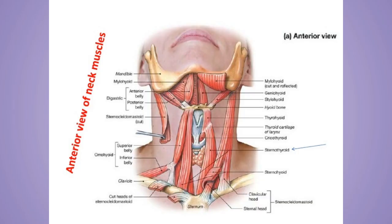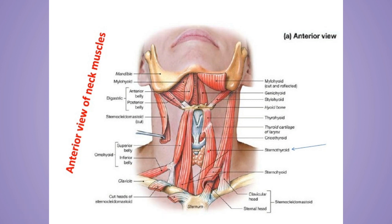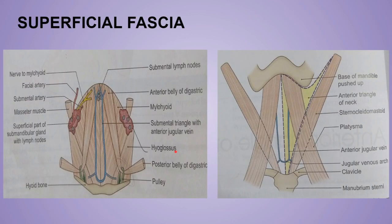This anterior median region of the neck extends from the chin to the sternum. The first layer is, of course, the skin. The skin of this anterior median region of the neck is freely movable over the deeper structures because of the looseness of the superficial fascia.